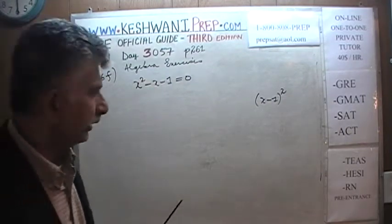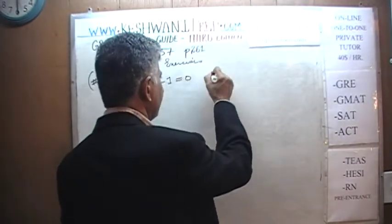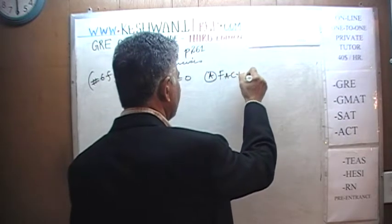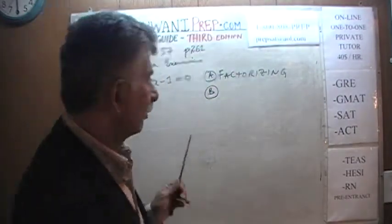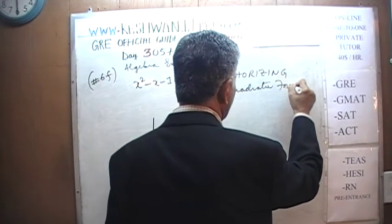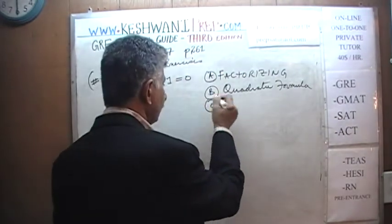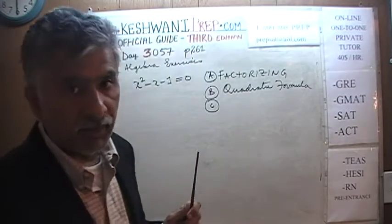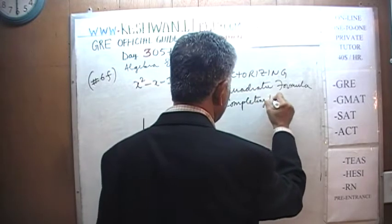Because it is a quadratic equation, we have three tools at our disposal. We can either solve this by factorizing, or we can use the straightforward quadratic formula, which seems like the simplest way to go. Or the third method is to solve by completing the square.